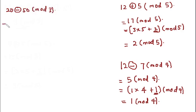Let's take other examples. So let's say we are asked to find 20 minus 50 modulo 3. So in this case, this is equal to 20 minus 50, which is minus 30 modulo 3. If you look at minus 30,